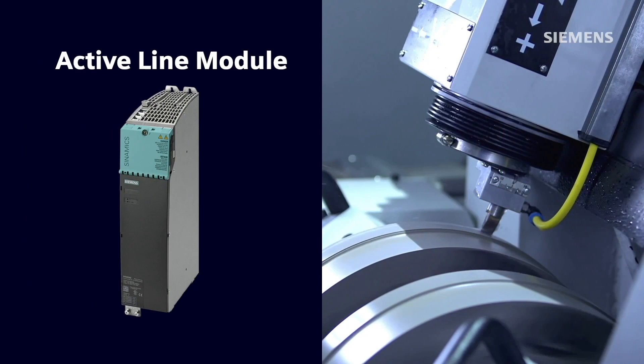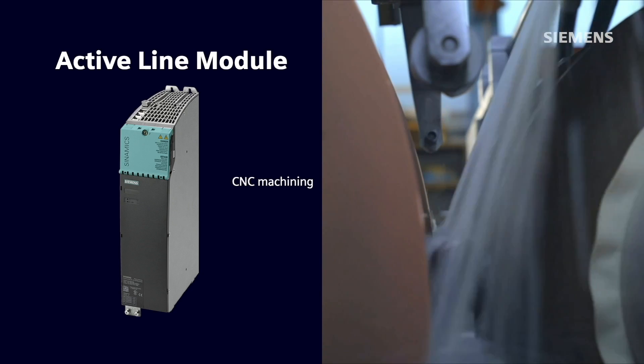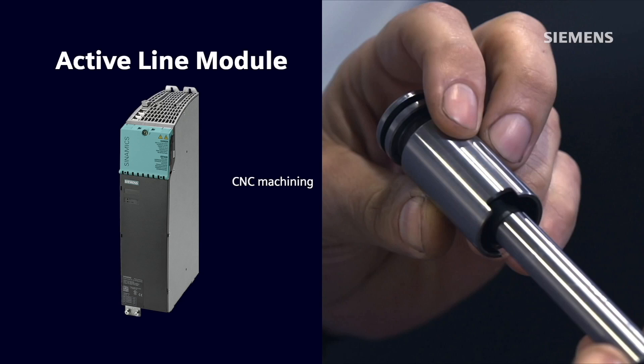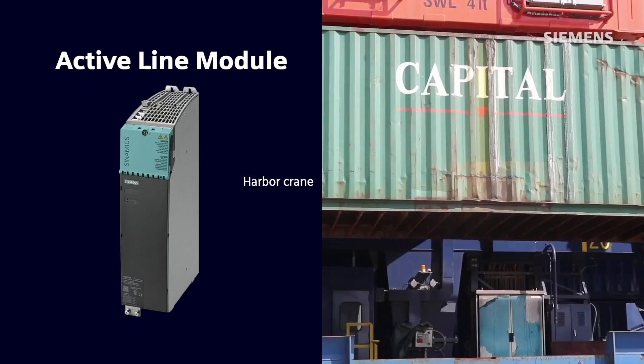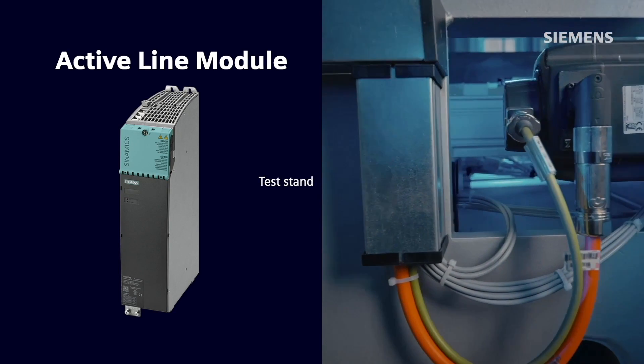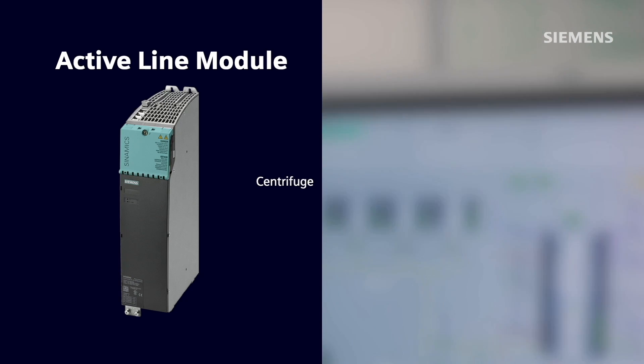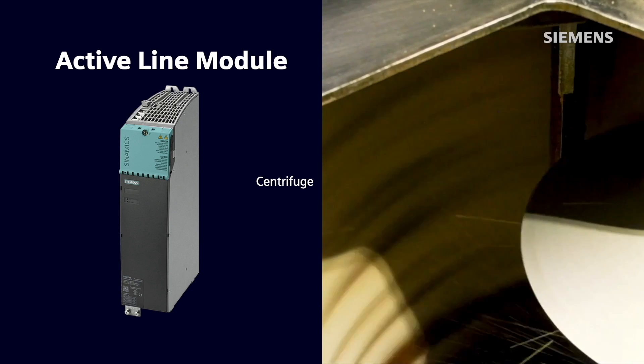For high performance applications, such as CNC machine tooling, where we want to try to remove any type of disturbances out of the system in order to achieve the smoothest finish and highest tolerance cut, it is typical to use the active line module to achieve this. The active line module would also be a primary choice for applications such as a harbor crane, where there would be considerable amount of regenerating. Applications such as test stands, or even a single axis application such as a centrifuge, would also benefit from having large regeneration cycles that have the requirement to feed back very clean power.